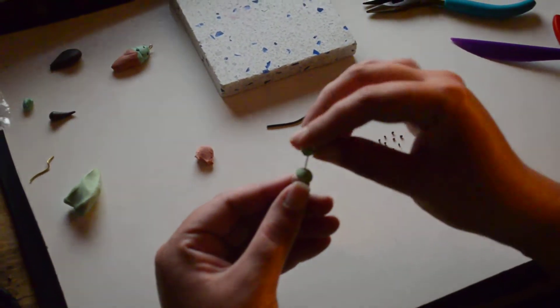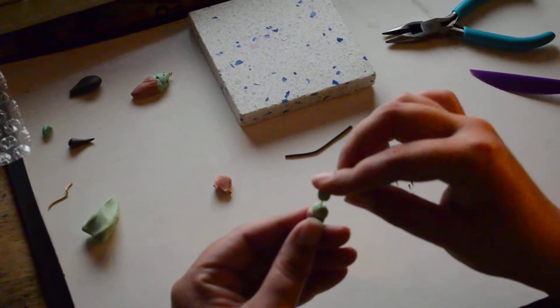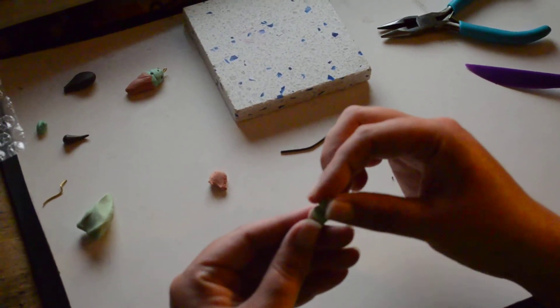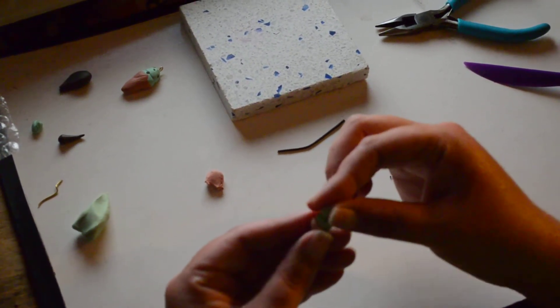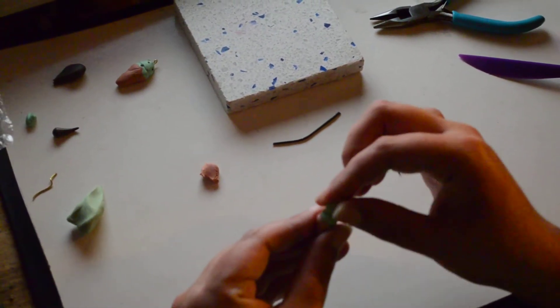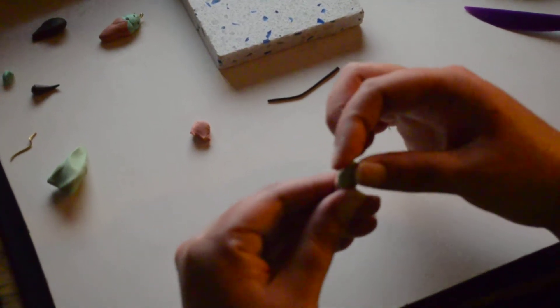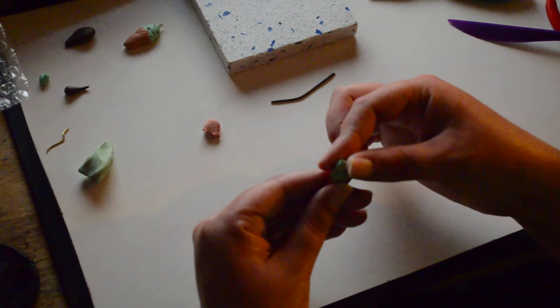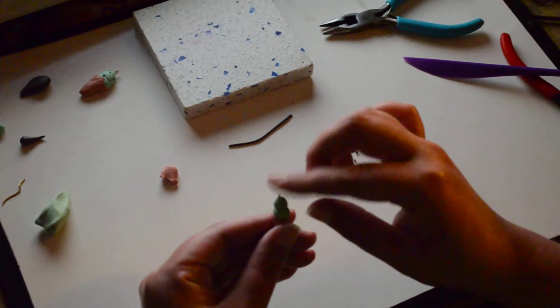And then I put my second ball on top of that and form it down. Just keep forming it until it looks how I want it to look.